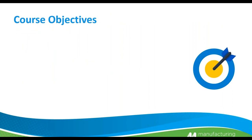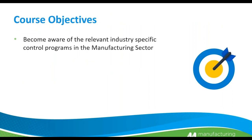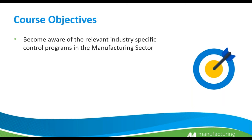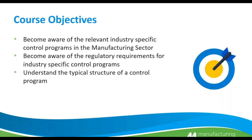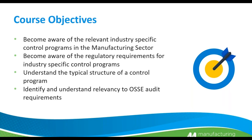Our course objectives for today include: to become aware of the relevant industry specific control programs and what they are for the manufacturing sector; to become aware of the regulatory requirements for the industry specific control programs; to understand the typical structures of a control program; and to identify and understand the relevance to the OCIE audit requirements.